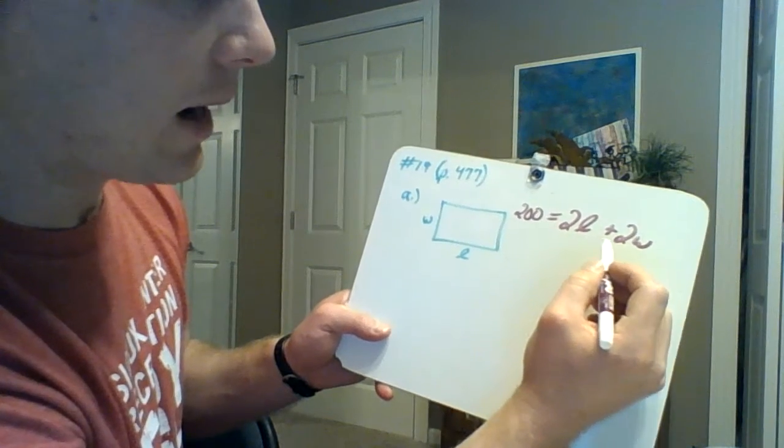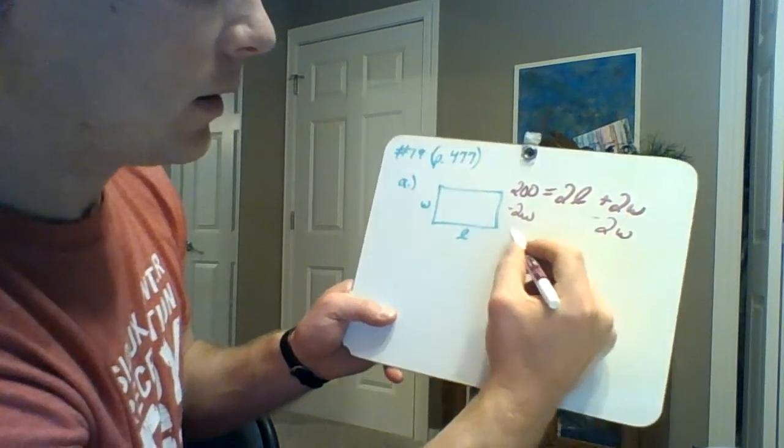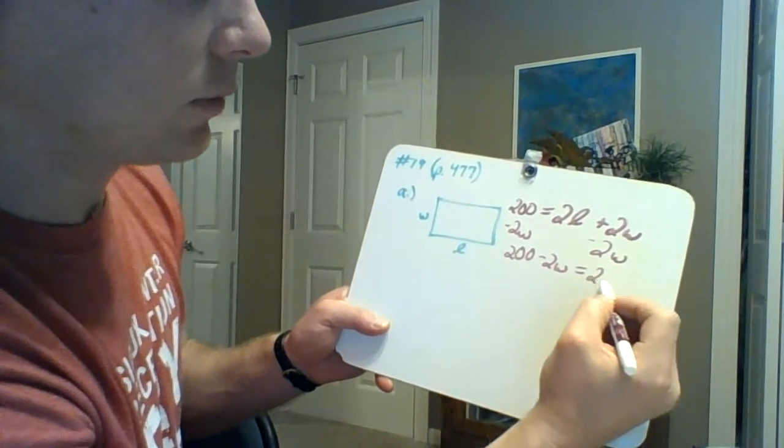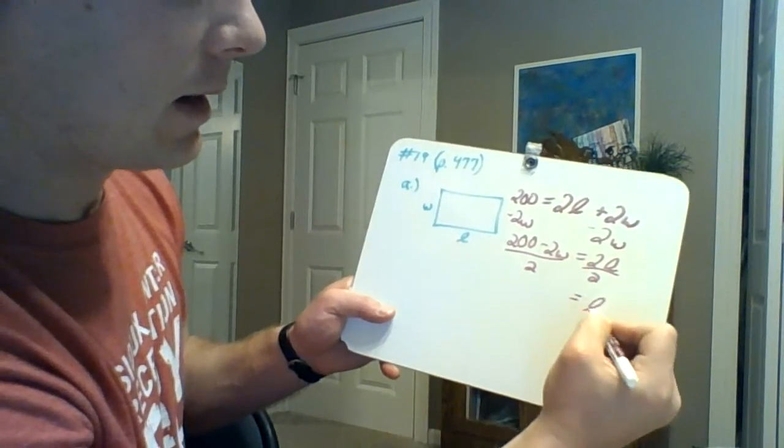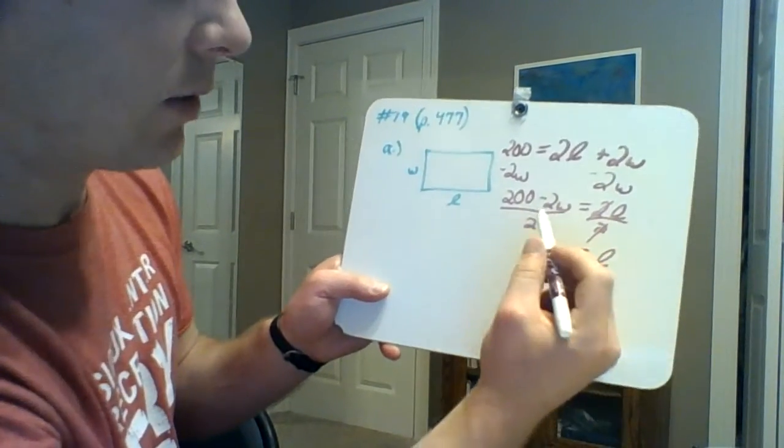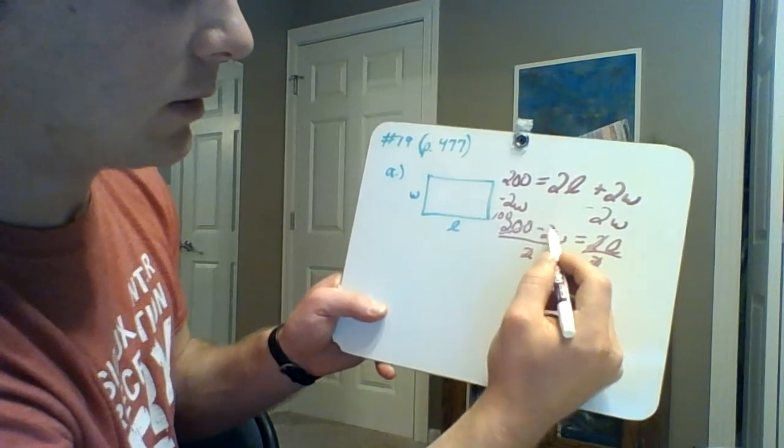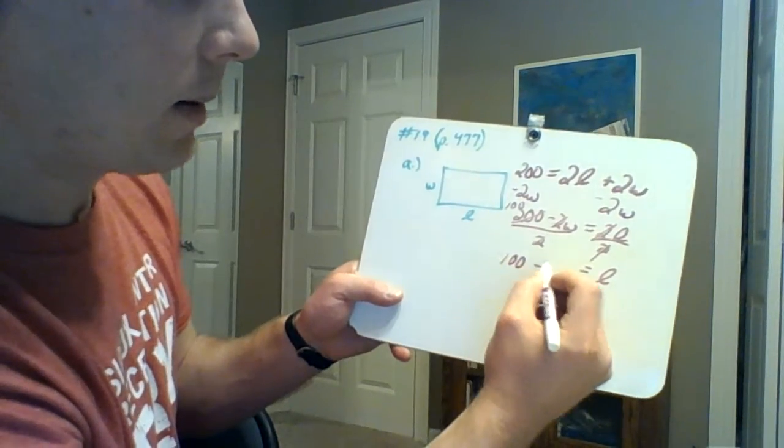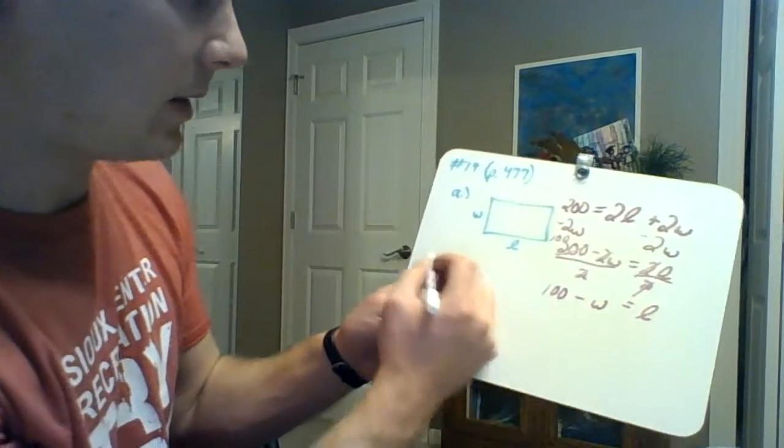So I'm going to subtract 2W, so 200 minus 2W equals 2L. Divide by 2, and L equals 100 minus W.